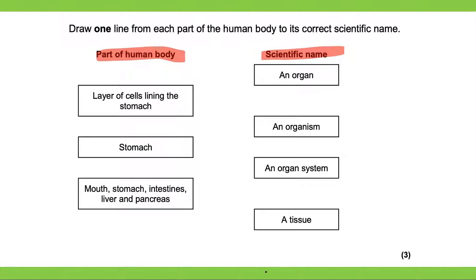So layers of cells lining the stomach. Well, where is that gonna go? Well, the clue over here, it says layer of cells. And this over here tells us that it's not one cell, it's a group of cells. Group of cells. So that would go to a tissue. So remember, a group of cells working together to perform a similar function is a tissue.